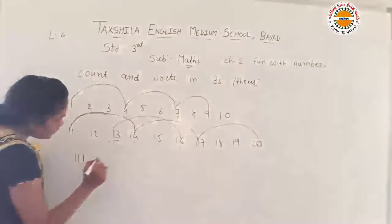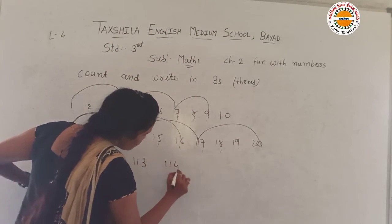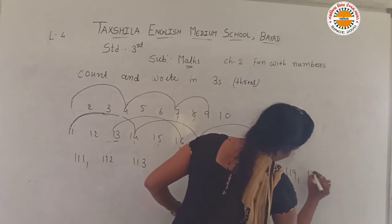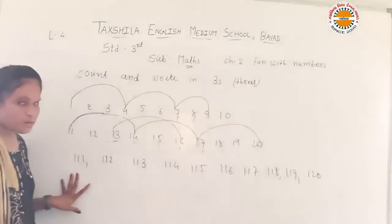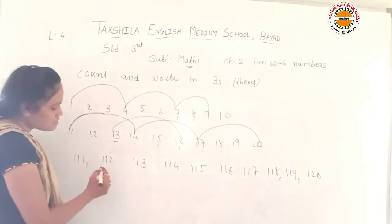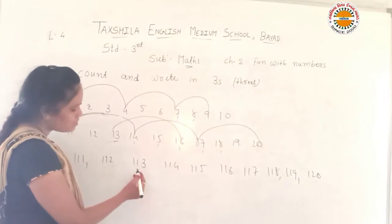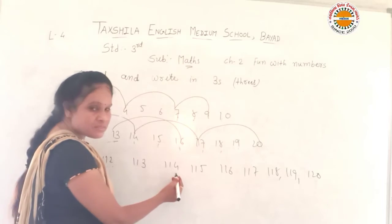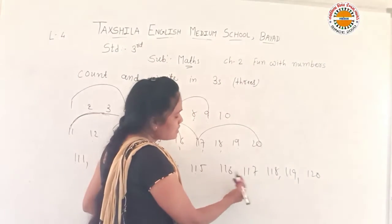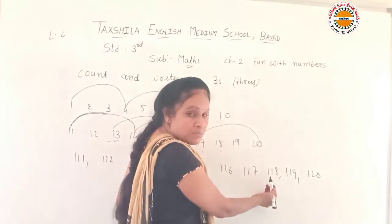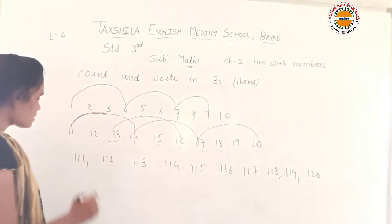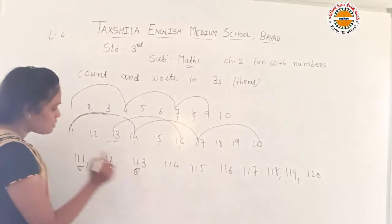Look at this — I will show you the same thing here. Which number is this? 112. Which number is this? 130. Which number is this? 114. 115, 116, 117, 118, 119, 120. This is the number, and we skip 3 numbers. We have 3 pieces to skip.